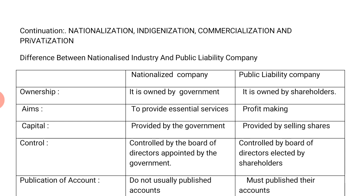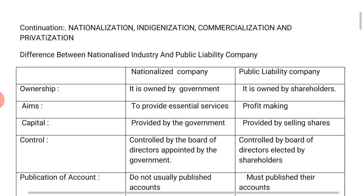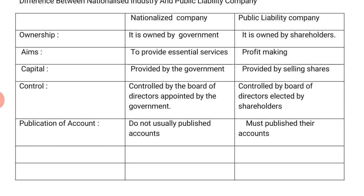Now we want to look at the differences between a nationalized industry and a public limited company. Having understood the meaning of nationalization at our last class — that is, government takes over the control and ownership of private enterprises — we now compare the two. First: ownership. At the nationalized company, it is owned by government. At the public limited liability company, it is owned by shareholders.